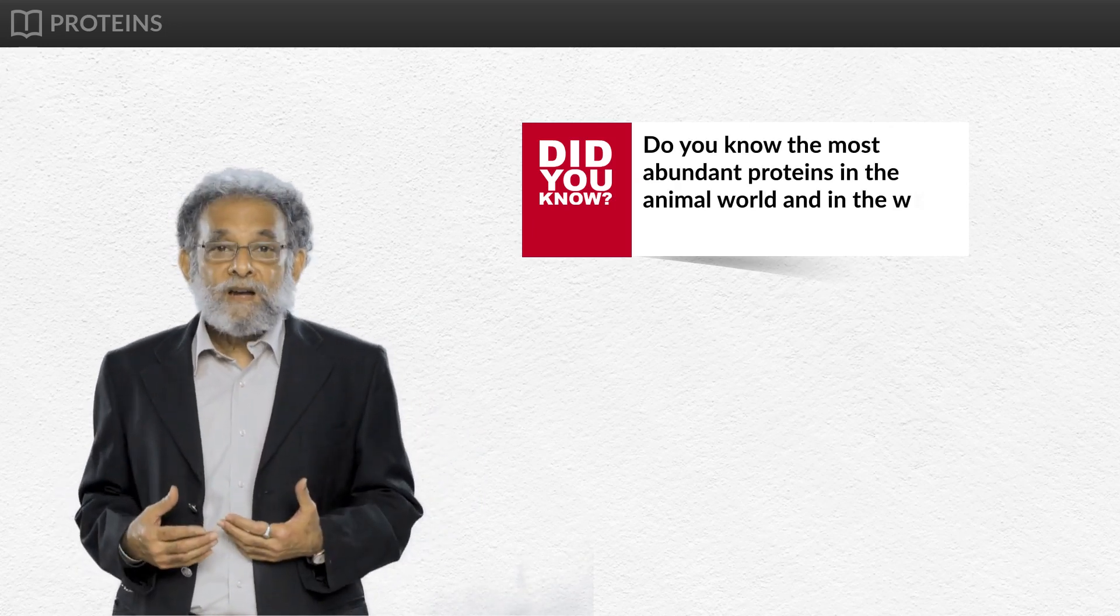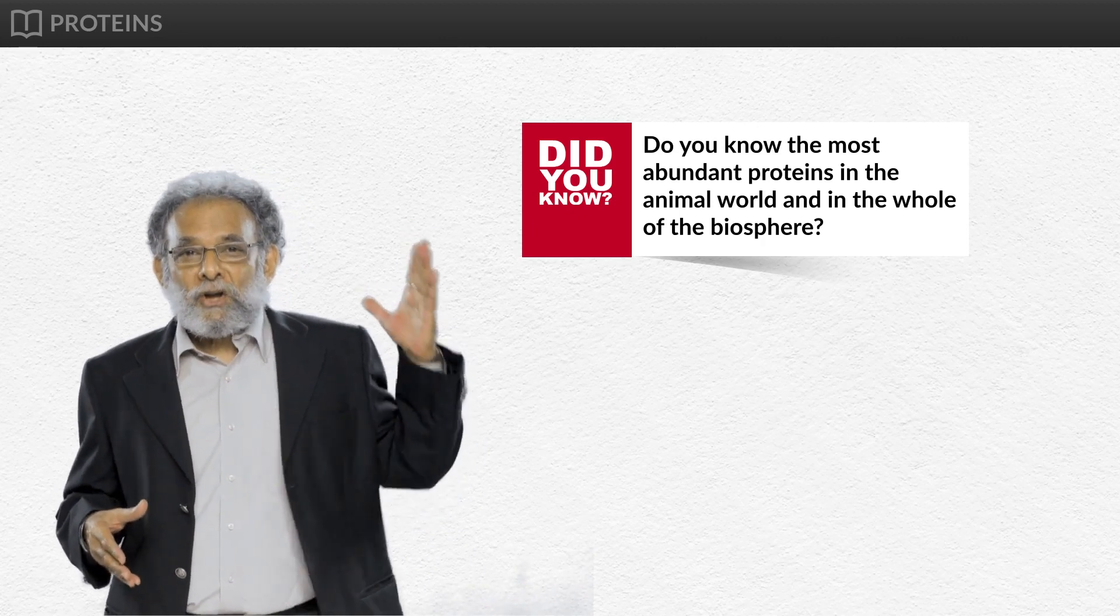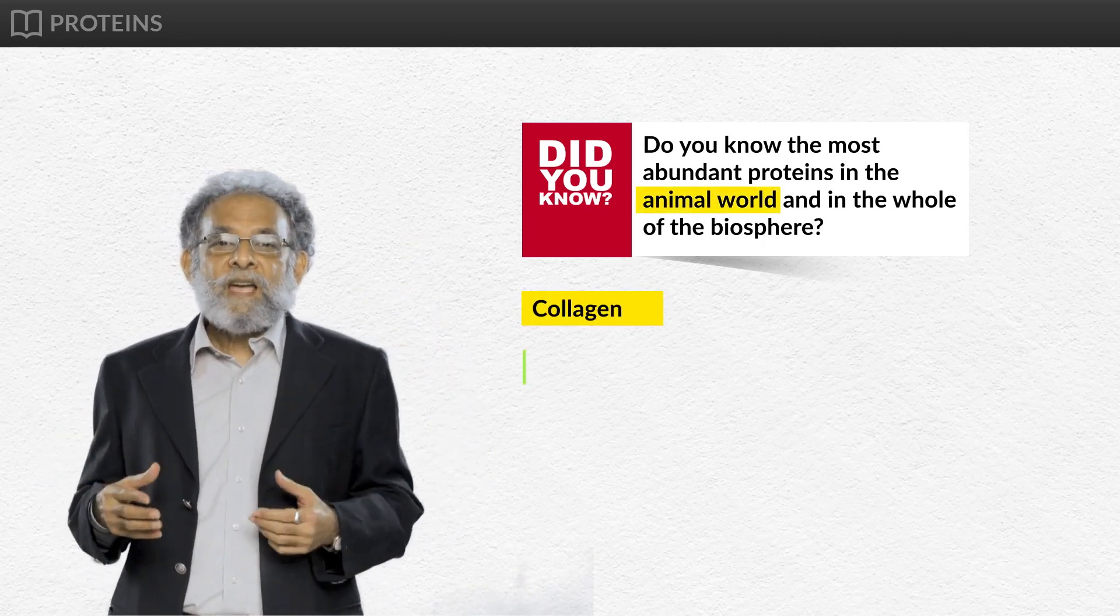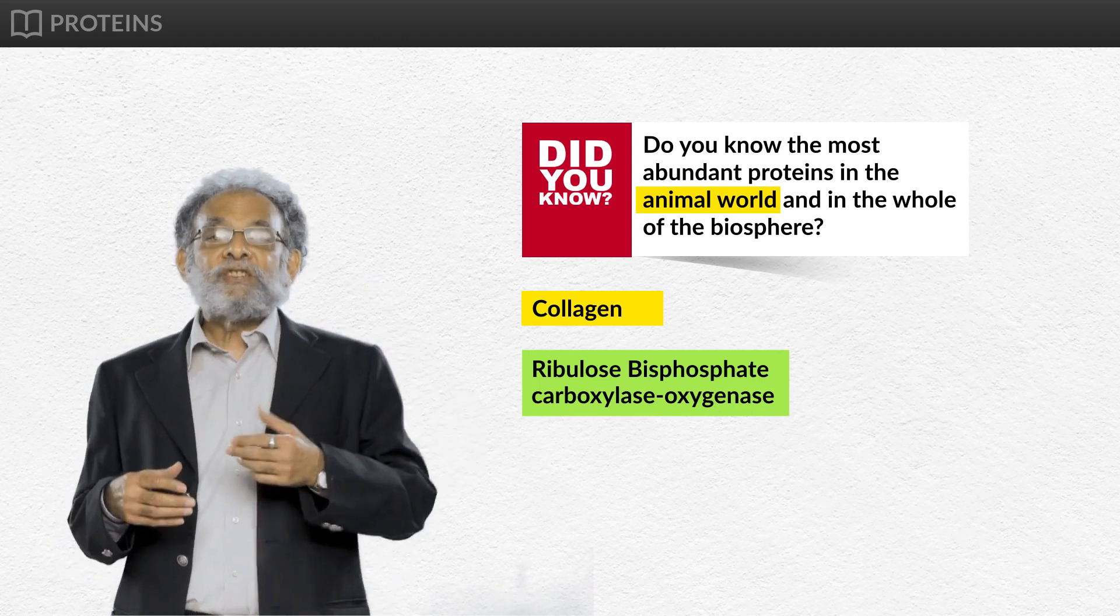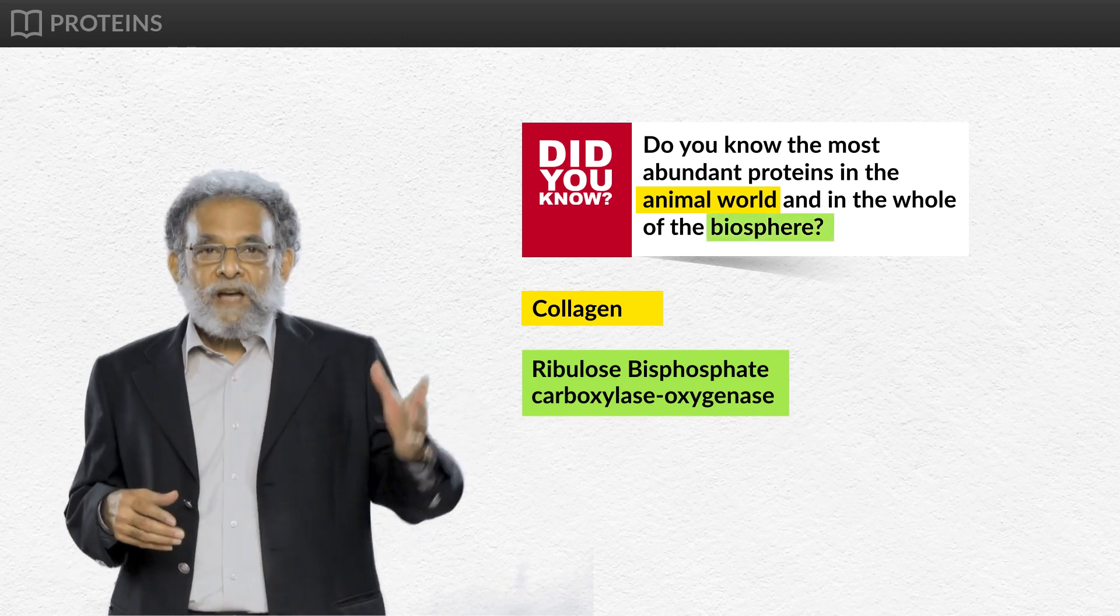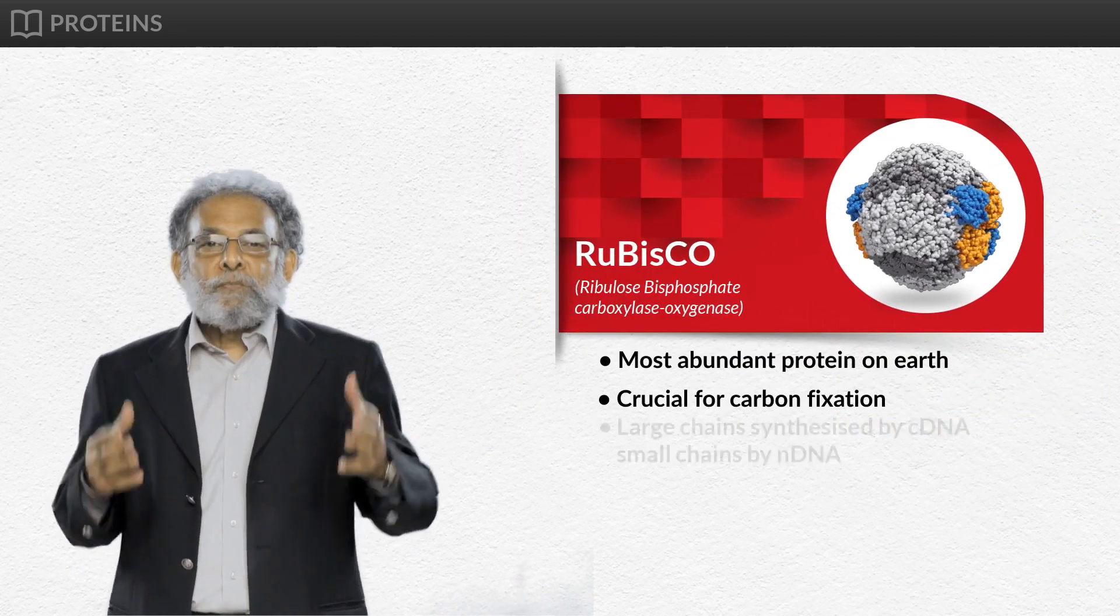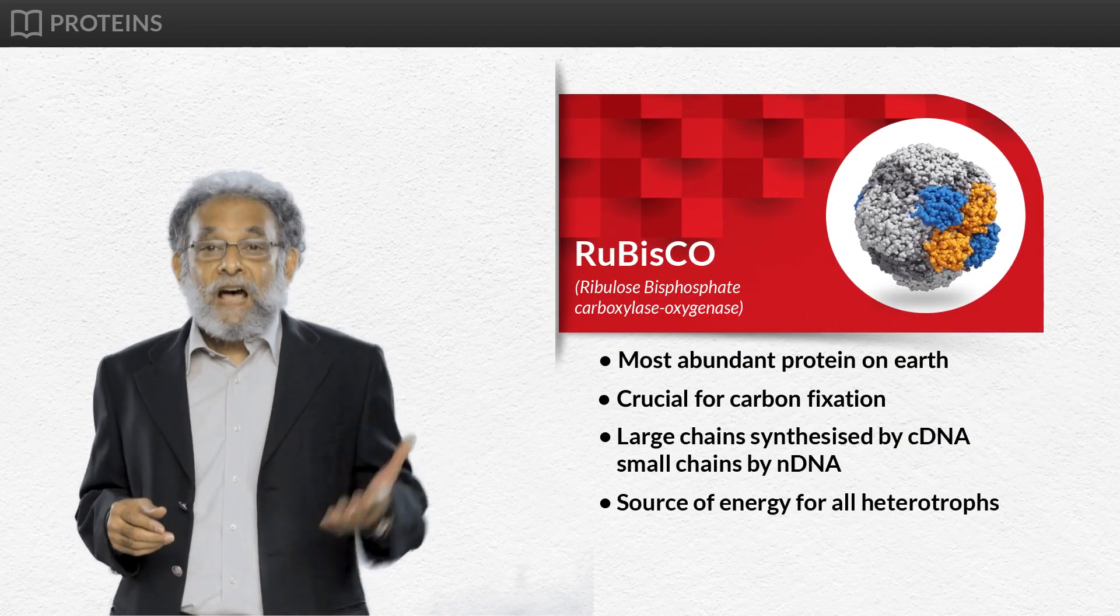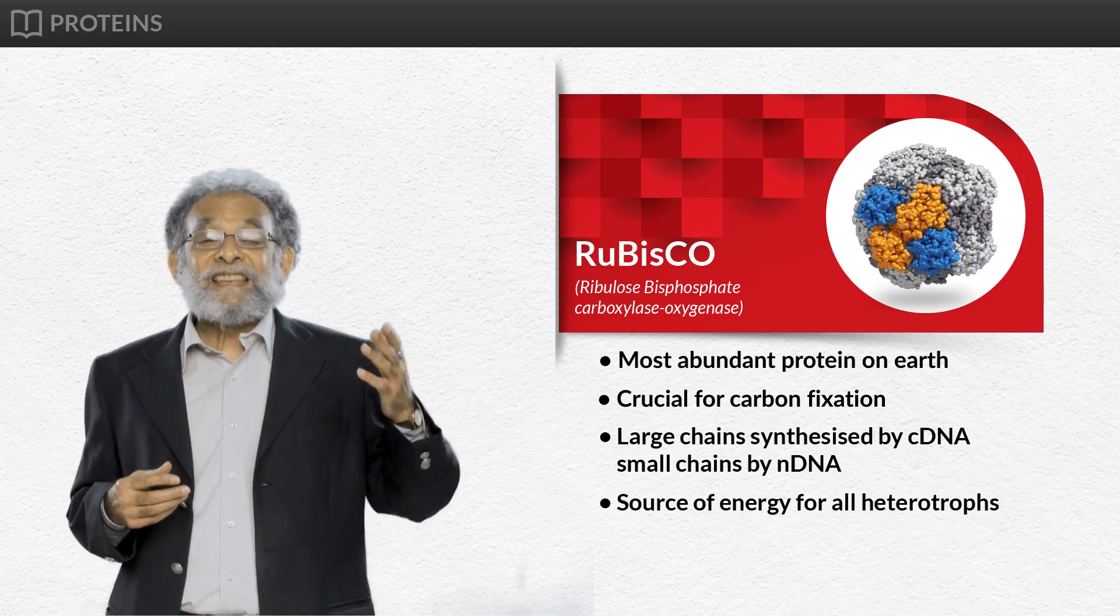Do you know the most abundant proteins in the animal world and the whole of the biosphere? Yes, it's the collagen in the animal world and ribulose bisphosphate carboxylate oxygenase, rubisco, in the biosphere. Rubisco is the most abundant protein as it is an enzyme involved in photosynthesis during carbon fixation.